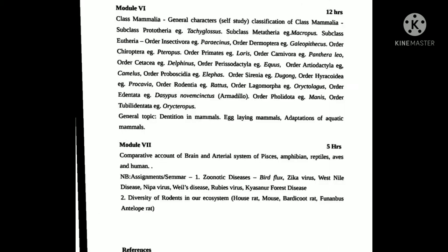In module 5, there are general characters, subclasses, orders and super orders. We will present a general topic on migration of birds, flight adaptations, and flightless birds. Now we learned about important questions and discussion. In module 6, which is a class of Mammals, you will learn a lot about mammalians — orders and super orders — and examples will be provided.